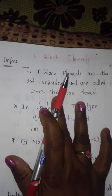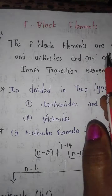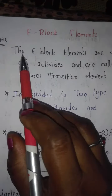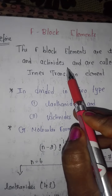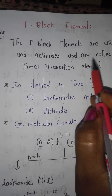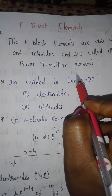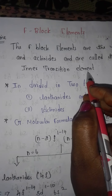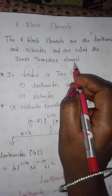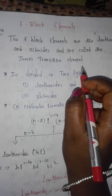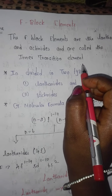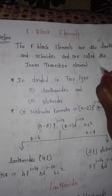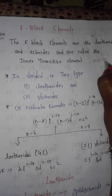Today we see about f-block elements. The f-block elements are the lanthanides and actinides, and are called inner transition elements. They are called inner transition elements because of their placement in the periodic table, due to the electronic configuration where the electron shell filled is the N-2 shell.